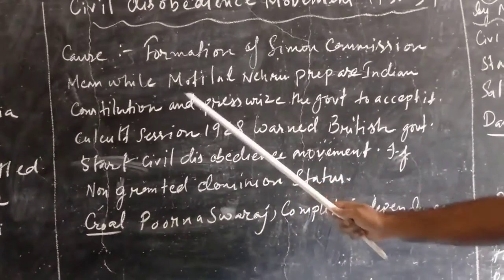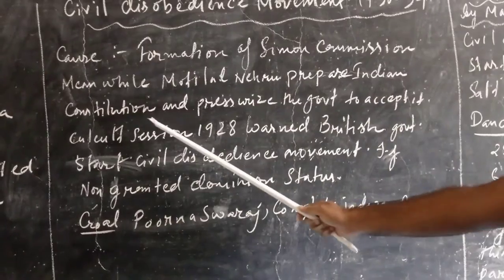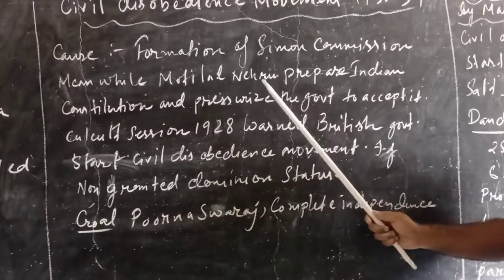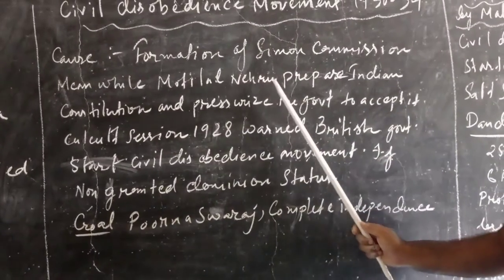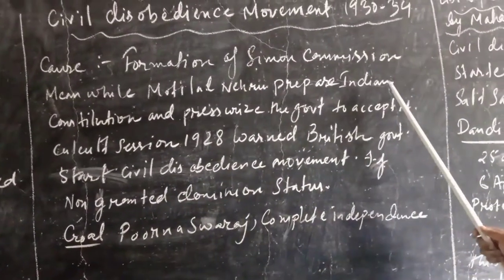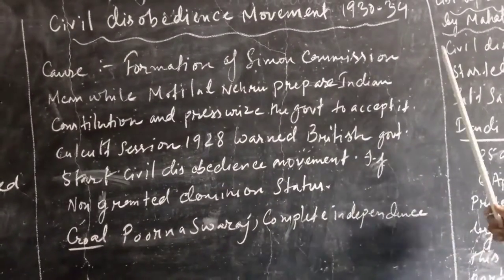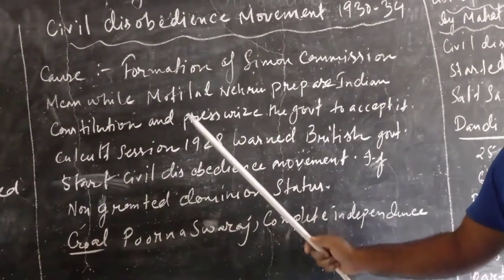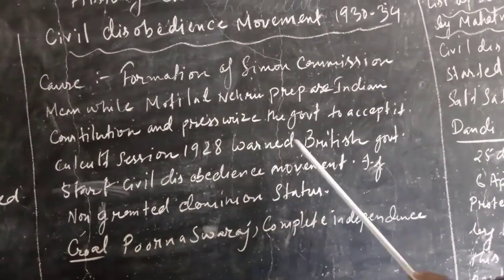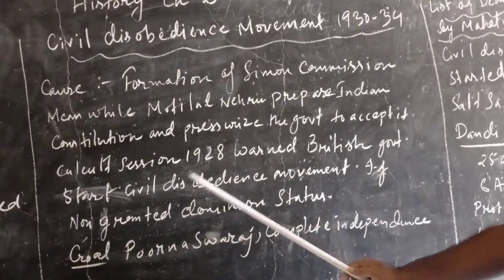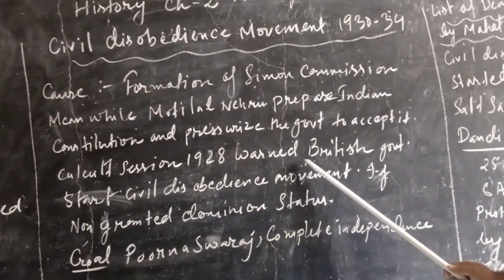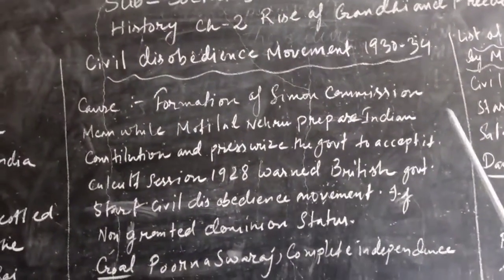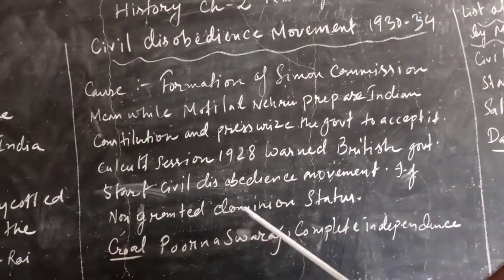Meanwhile, Motilal Nehru prepared an Indian constitution and pressurized the government to accept it. He took the responsibility of the drafting committee, prepared the Indian constitution, and put pressure on the government to accept that constitution and give dominion status to India. At the Kolkata session in 1928, the British government was warned that Indians would start the Civil Disobedience Movement if dominion status was not granted.